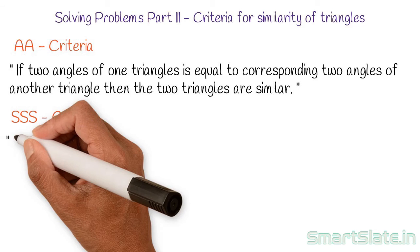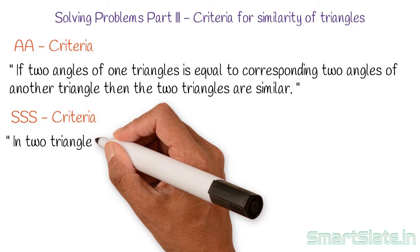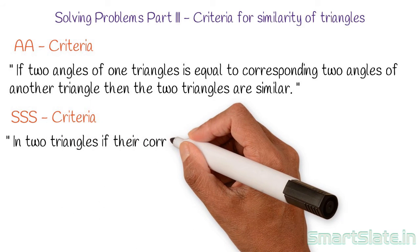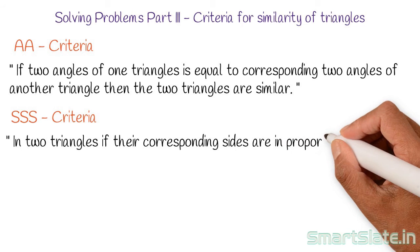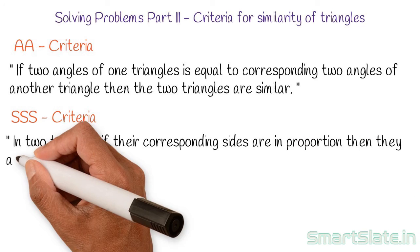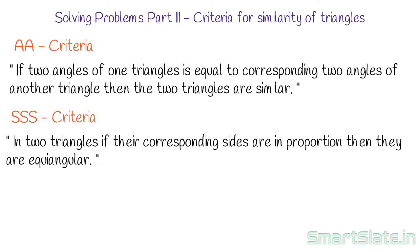The second criteria is called Side-Side-Side, or simply SSS criteria. It states: in two triangles, if their corresponding sides are in proportion, then they are equi-angular.